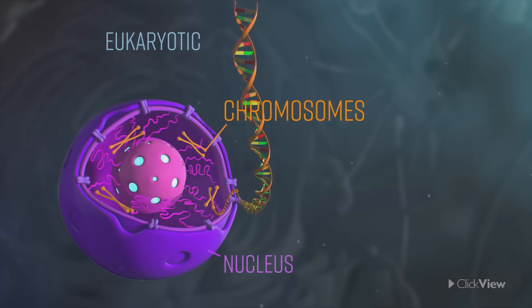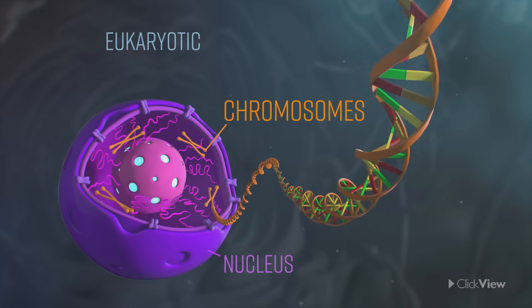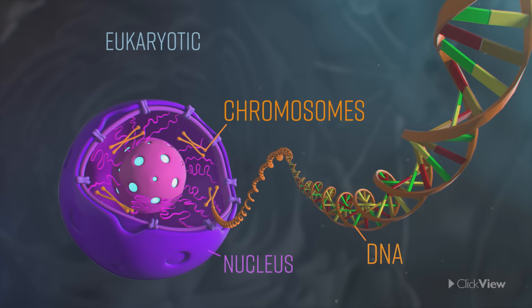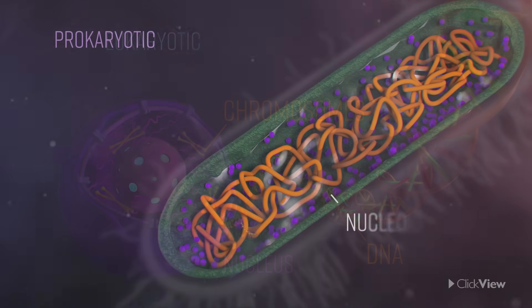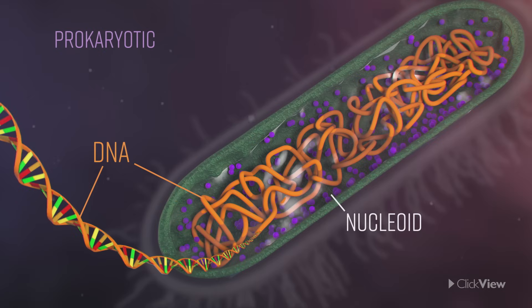Both types of cell have DNA as the basis for their genes, although the structure is different. The genetic material regulates cell function and contains the coded information that is passed on to offspring.